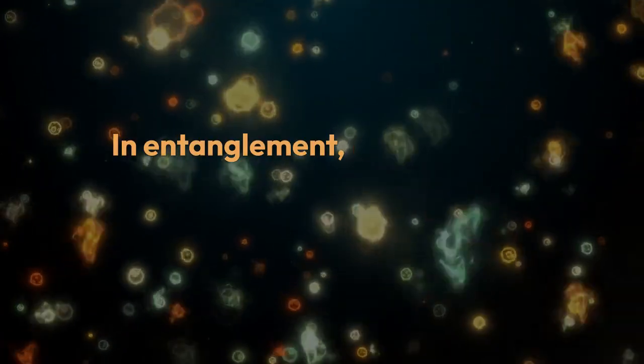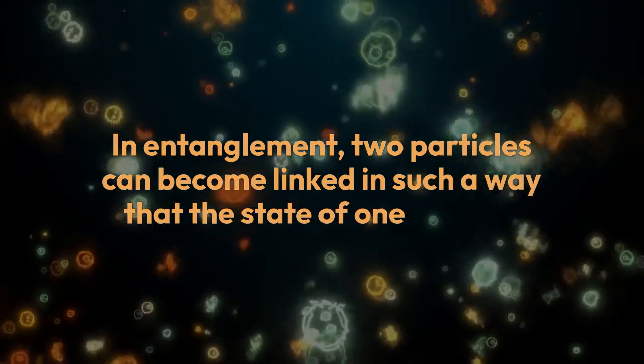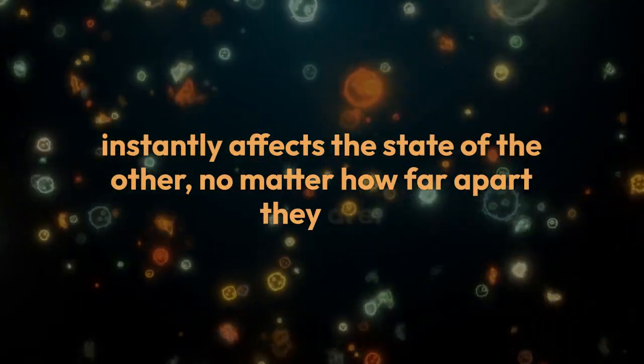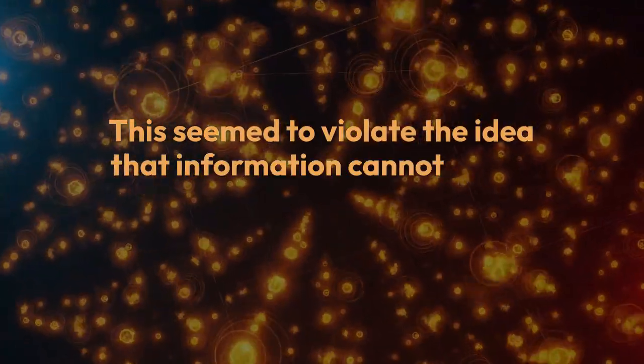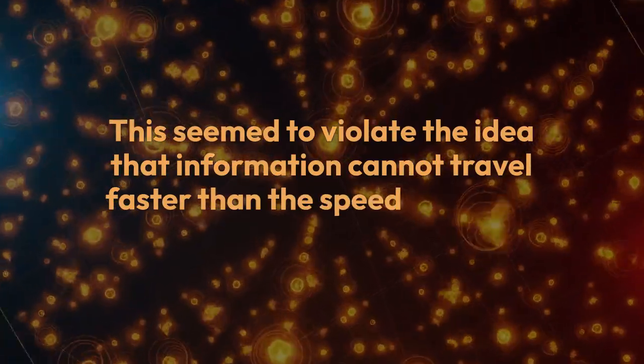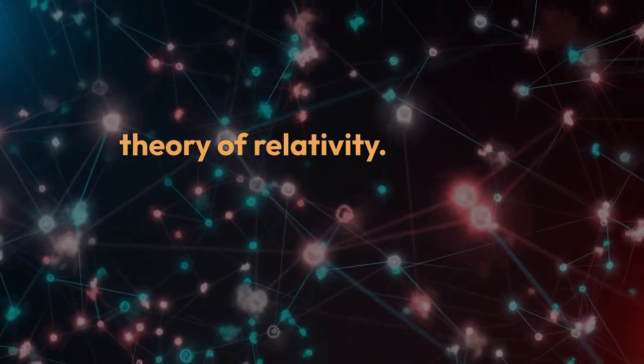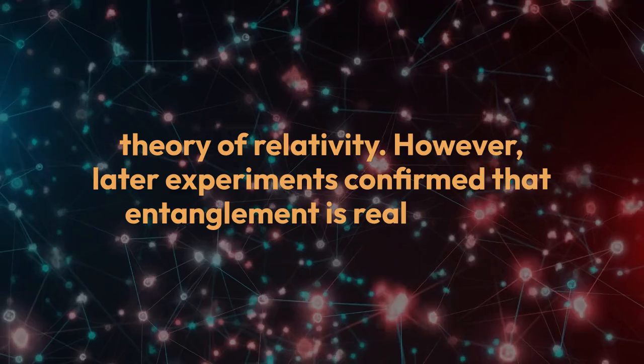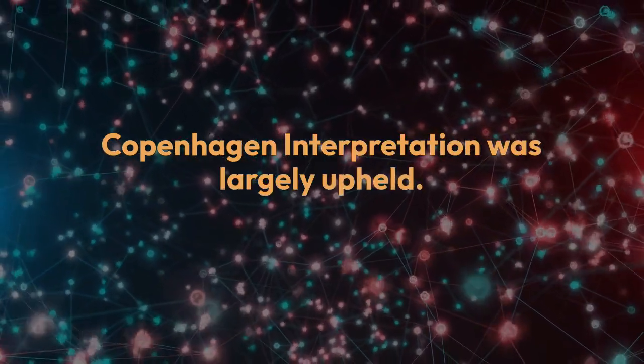In entanglement, two particles can become linked in such a way that the state of one particle instantly affects the state of the other, no matter how far apart they are. This seemed to violate the idea that information cannot travel faster than the speed of light, a cornerstone of Einstein's theory of relativity. However, later experiments confirmed that entanglement is real, and the Copenhagen interpretation was largely upheld.